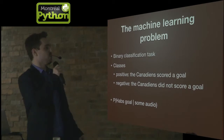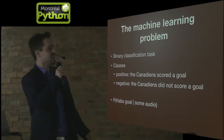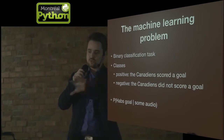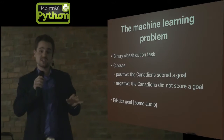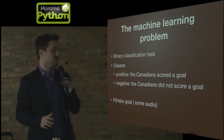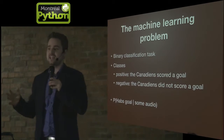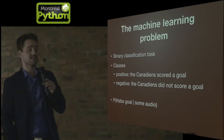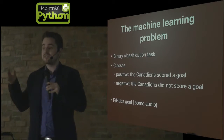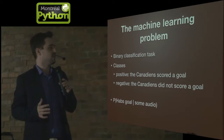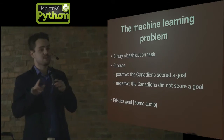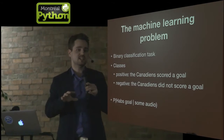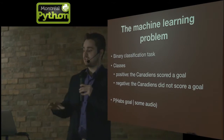So, machine learning. What's the machine learning task? We're trying to do binary classification — set apart two different things. The positive class is goals by the Canadiens; that's what we're looking for, what we want to detect. The negative class is basically everything else. So we're trying to set those two things apart, or looked at it another way, we're trying to model the probability of a Habs goal given some audio.